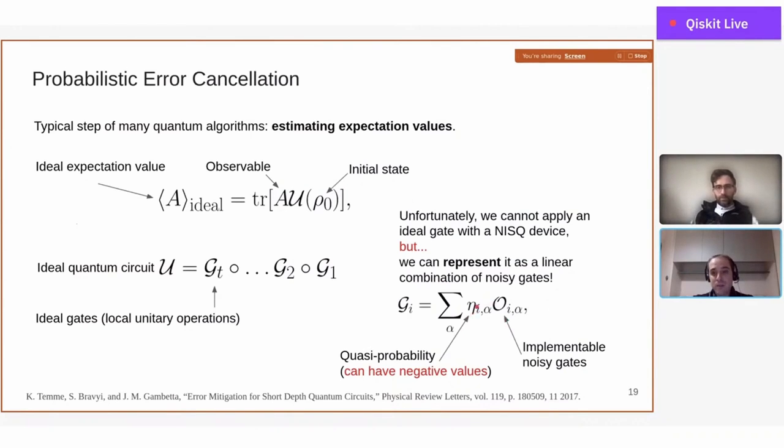These representations can be built if we know the full tomography of the noisy operations, or at least if we have a guess for the noise model of the system, because depending on this you get different representations. In Mitiq we also have a function that, given the super operators of the noisy operations, produces this quasi distribution that gives you the ideal gate. It's a numerical optimization problem.